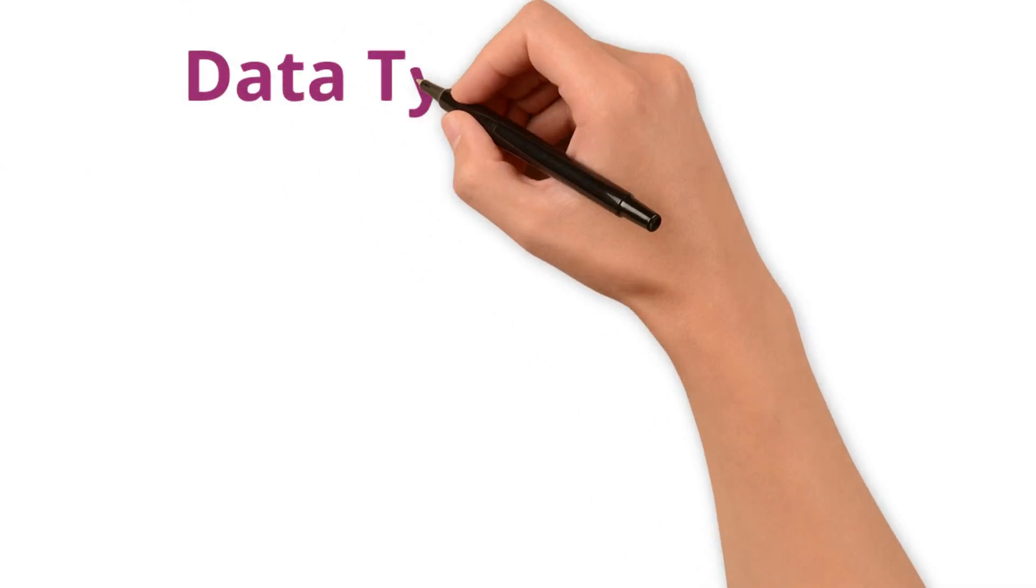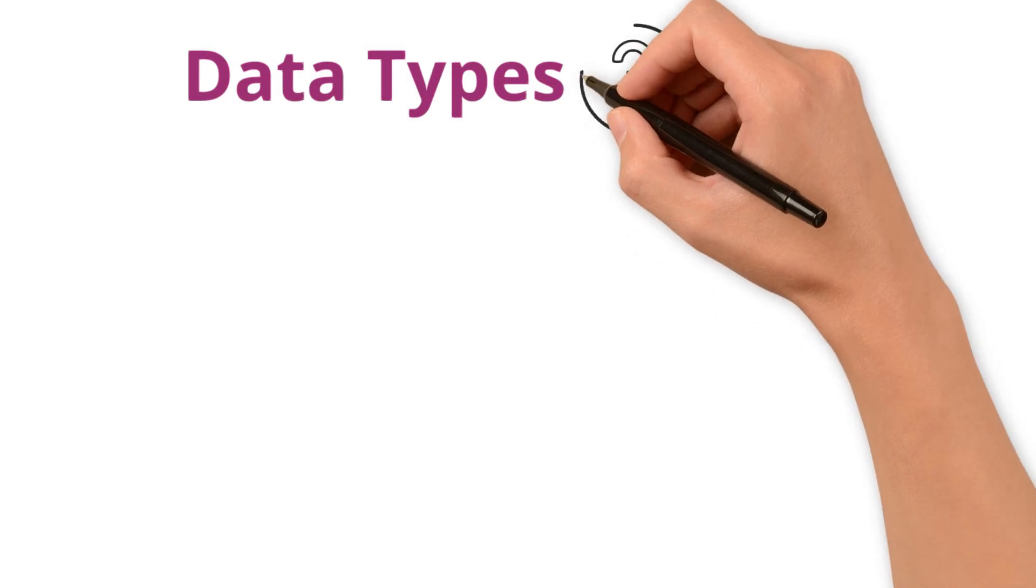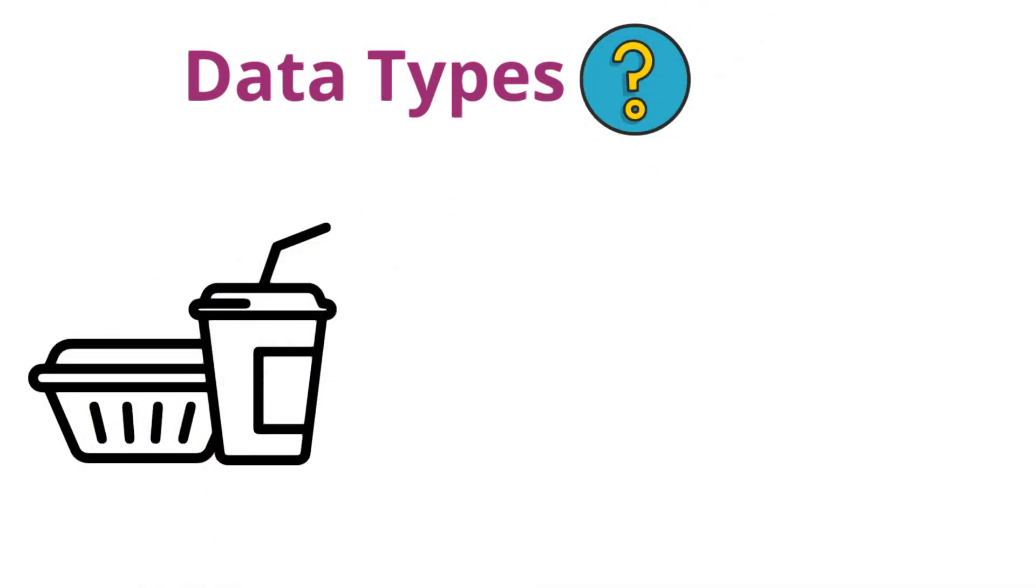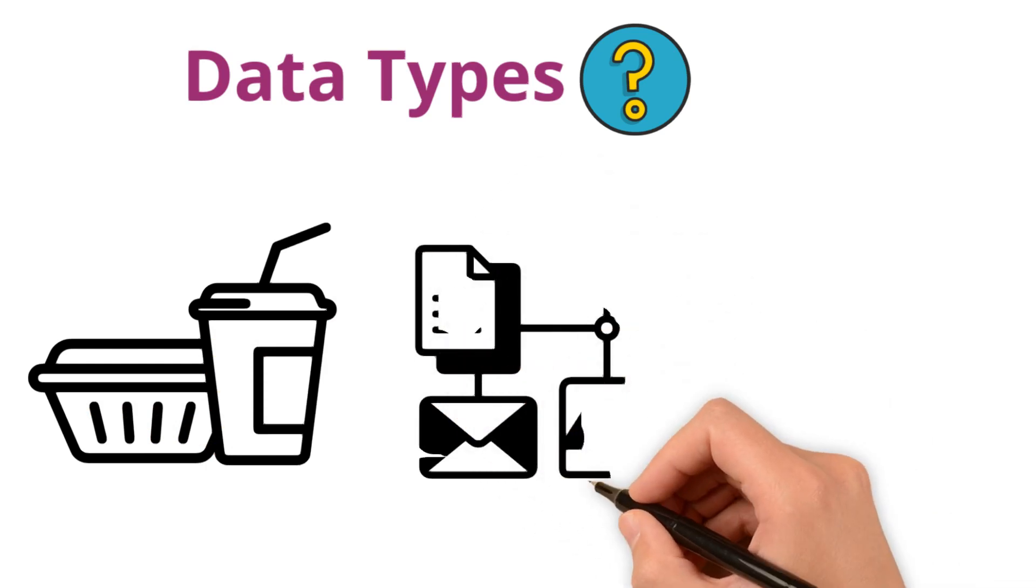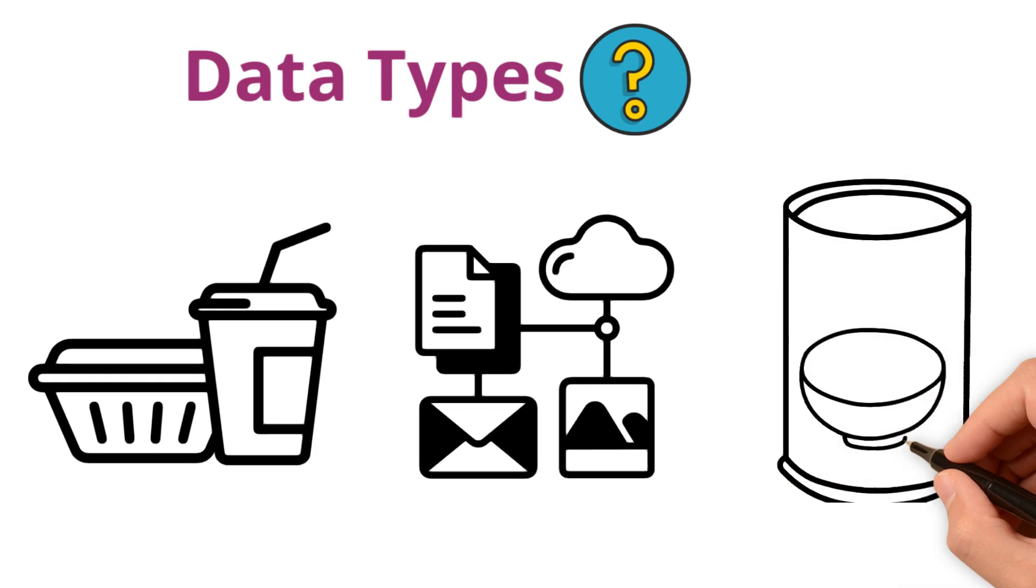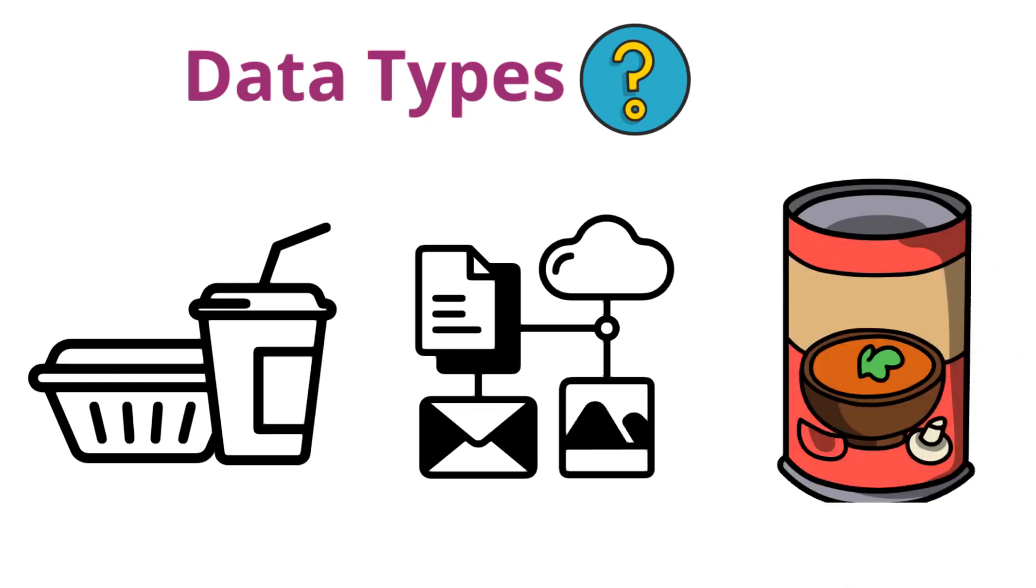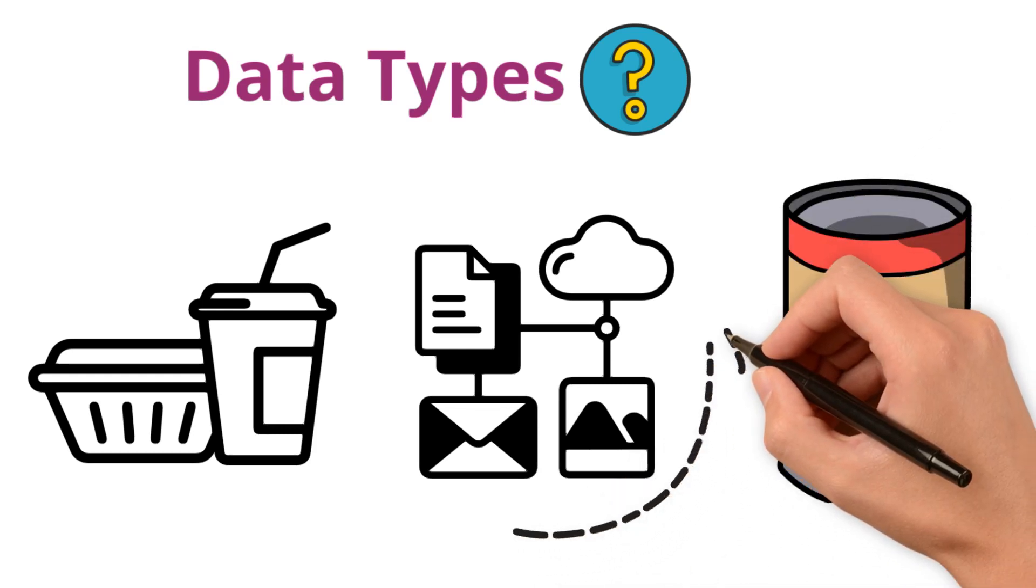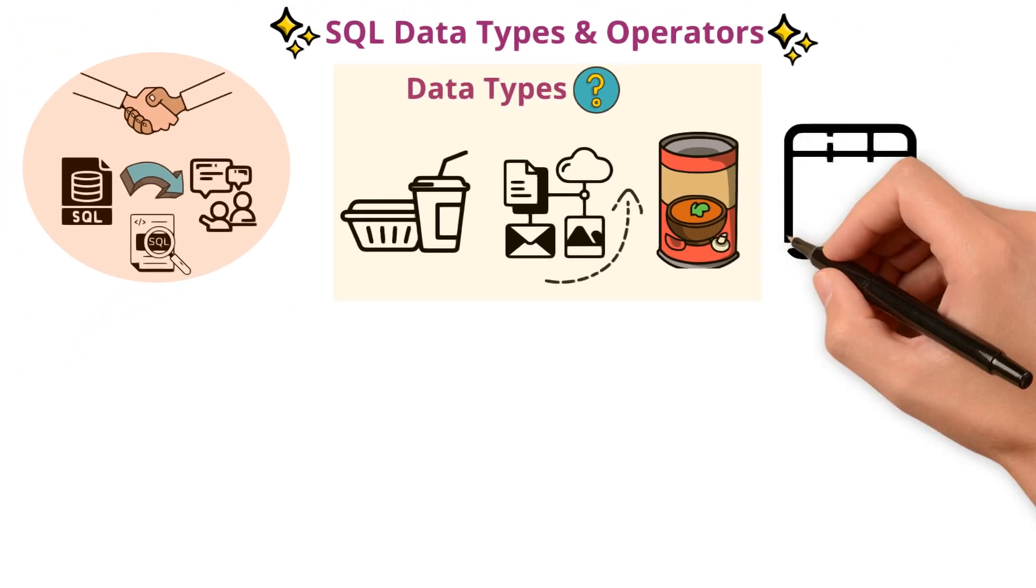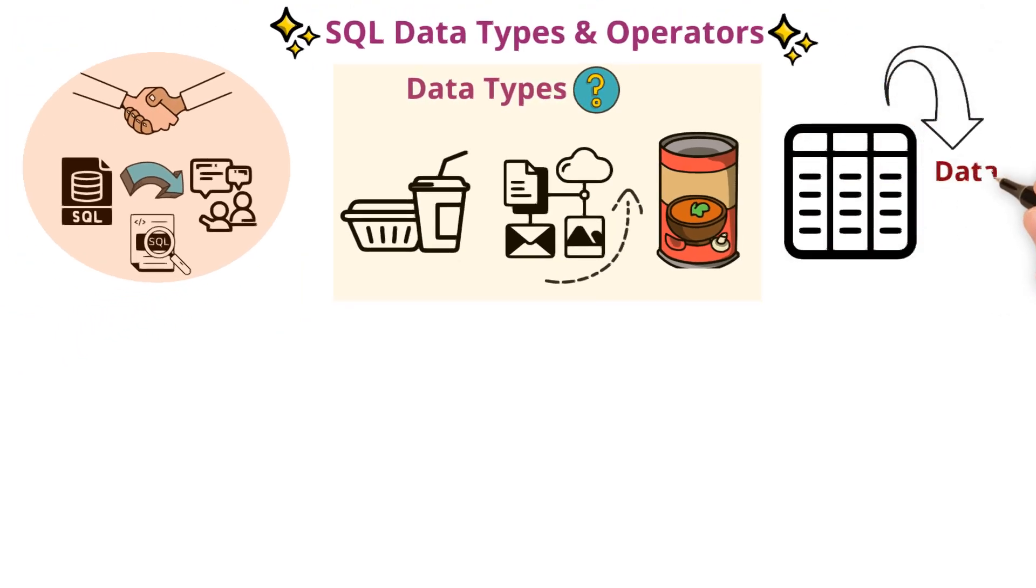Let's first touch on data types. What are they? Think of data types like different types of containers, each designed to hold a specific kind of data. Just like you wouldn't put soup in a basket, you wouldn't store a particular type of data in another. When defining columns in a database table, you specify the data type of each column according to the kind of data it will store.